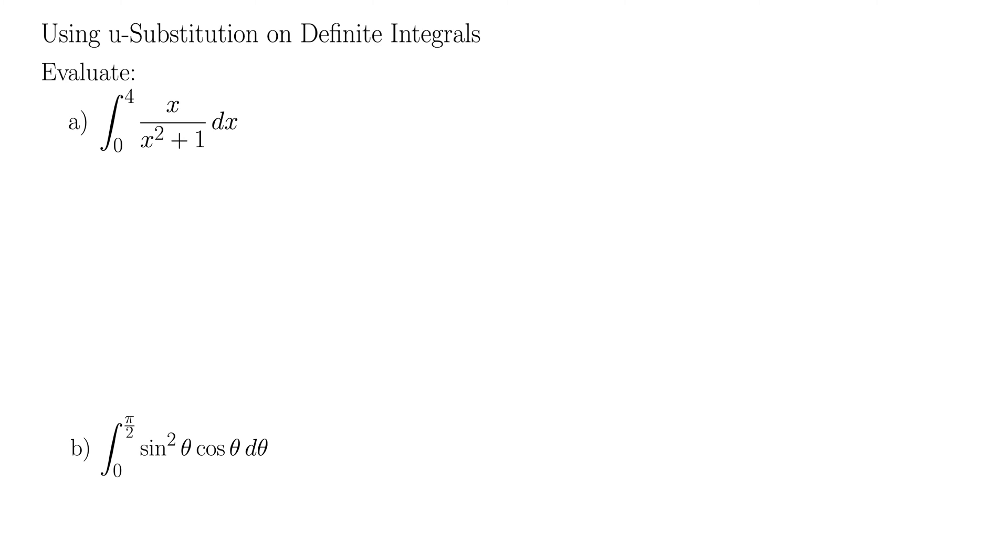Here we want to look at using u-substitution on definite integrals, and what makes an integral definite is these limits of integration here. So we won't have our plus c as our answer, but instead we'll have a number. Definite integrals always evaluate to a number because they are essentially the area under the curve, and the area is a finite number.